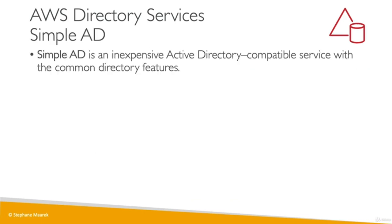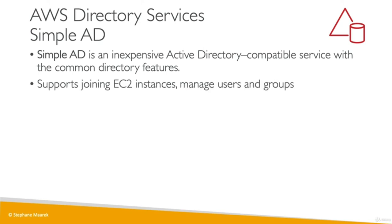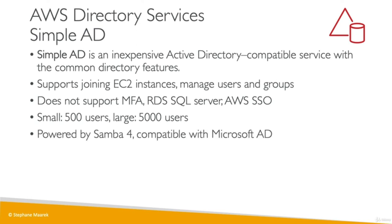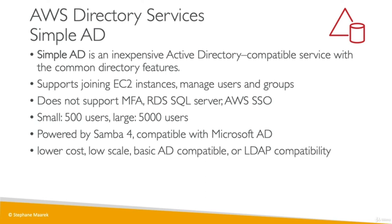Finally, you have Simple AD, which is a very inexpensive Active Directory with the most common directory features. It supports joining of EC2 instances and managing users and groups, but it won't support multi-factor authentication, integration with RDS SQL Server, or SSO. It's only for a small number of users — 500 up to 5,000 depending on the tier. It's powered by Samba 4 and is compatible with Microsoft AD in terms of the API, but it's lower cost and lower scale, with only basic AD compatibility. You cannot set up a trust with an on-premise Microsoft AD. The most important option is AWS Managed Microsoft AD, but now you have all three directory service options.